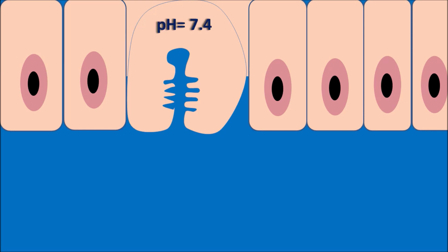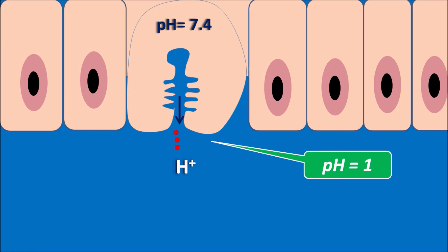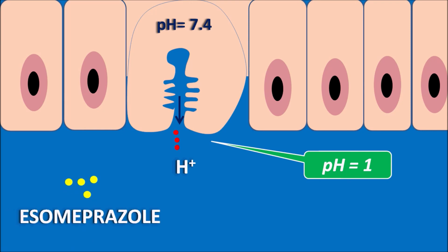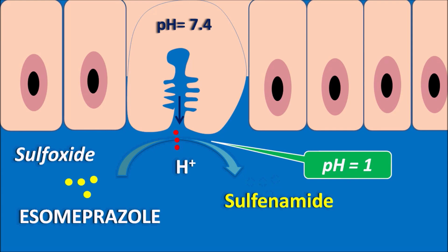Within the stomach, at the secretory canaliculi, the pH is 7.4. But when gastric acid is released, the pH changes to around 1. In this acidic environment, S-omeprazole is converted into its active metabolite. S-omeprazole initially presents as a sulfoxide, but in the acidic environment it is converted into the sulfenamide metabolite. This sulfenamide is the active metabolite which can block the proton pump, thereby controlling gastric acid secretion.